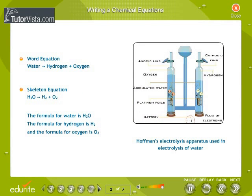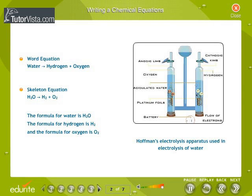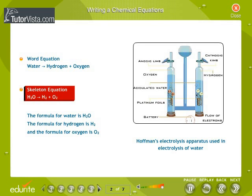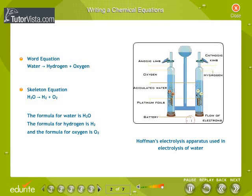Word equations such as 'water produces hydrogen and oxygen when electrolyzed' can be informative. However, skeleton equations, in which chemical formulae are substituted for chemical names, are even more useful. Skeleton equations are sometimes called unbalanced equations. For the electrolysis of water, the formula for water is H₂O, for hydrogen is H₂, and for oxygen is O₂.